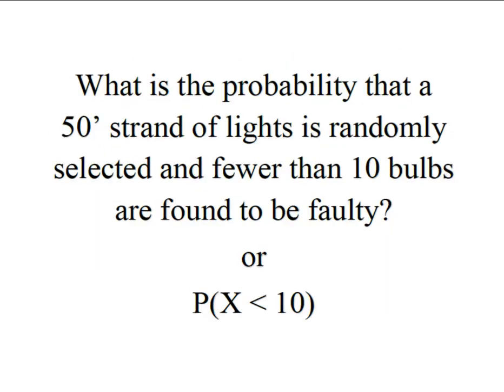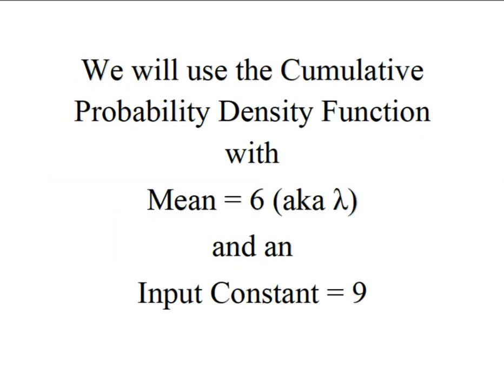So what's the probability that a 50-foot strand of lights is randomly selected and fewer than 10 bulbs are found to be faulty? This is the same thing as solving for the probability that X is less than 10. When we get into Minitab, we're going to use the cumulative probability density function, and our mean or lambda is 6 because we're looking at just one 50-foot strand of lights. Our input constant has to be 9 because we want fewer than 10 — that is, 9 down to 0.